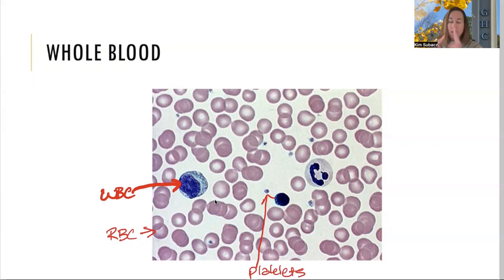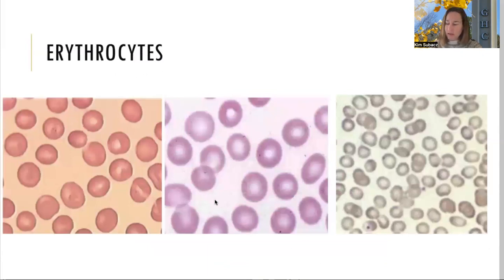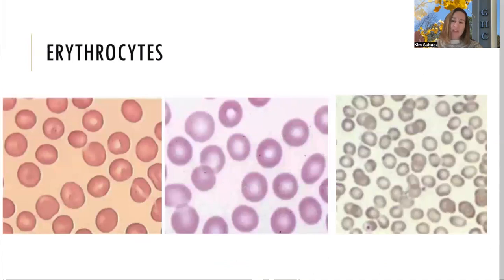For each of these three formed elements you should be able to recognize them on sight, know how many of them there are, and know what their job is. First up are the erythrocytes — our red blood cells — and that is why blood is red. They are chock full of the protein hemoglobin, whose job is to carry oxygen and bring it to your tissues.